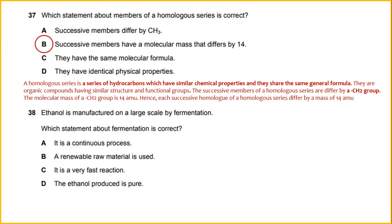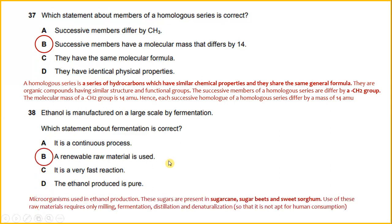Number 38. Ethanol is manufactured on a large scale by fermentation. Which statement about fermentation is correct? Microorganisms are used in ethanol production. Sugars present in sugar cane, sugar beet, and sorghum are the raw materials, which require only milling, fermentation, distillation, and denaturation so that it is not suitable for human consumption. The answer for 38 will be: a renewable raw material is used.